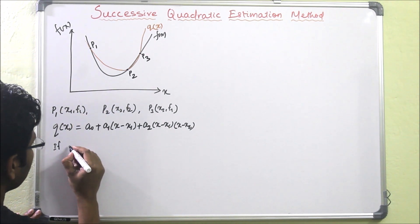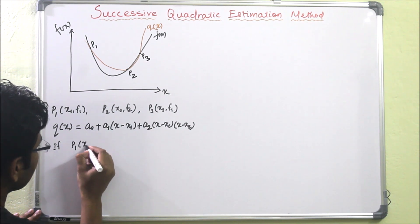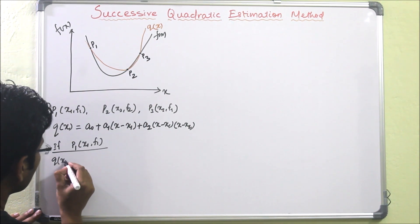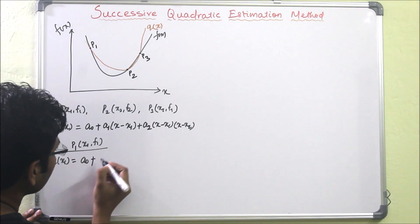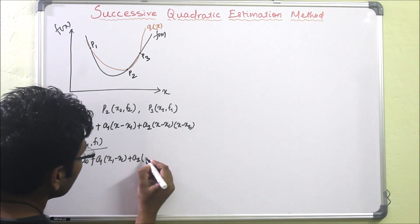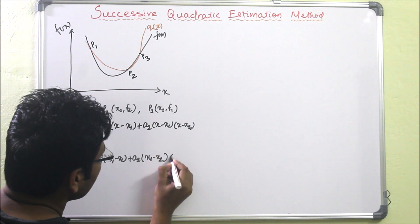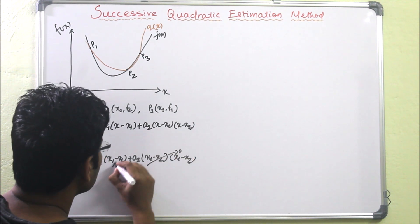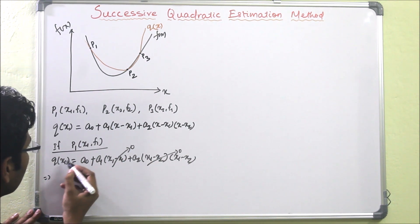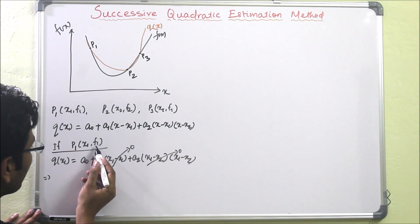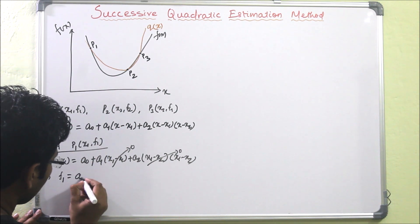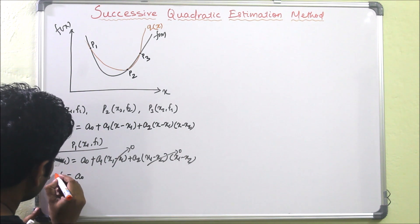If we take point p1, that is (x1, f1), then q of x1 equals a0 plus a1 times (x1 minus x1) plus a2 times (x1 minus x1) times (x1 minus x2). The second and third terms become zero, so q of x1 equals a0. Since the function value at x1 is f1, we get f1 equals a0.